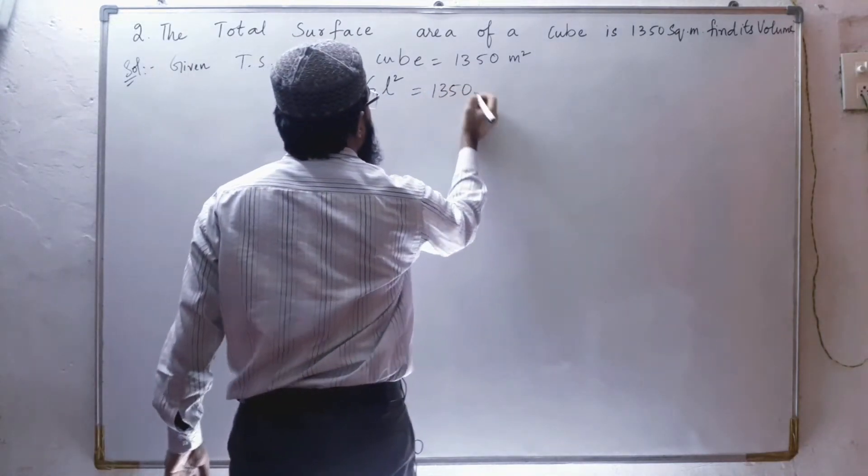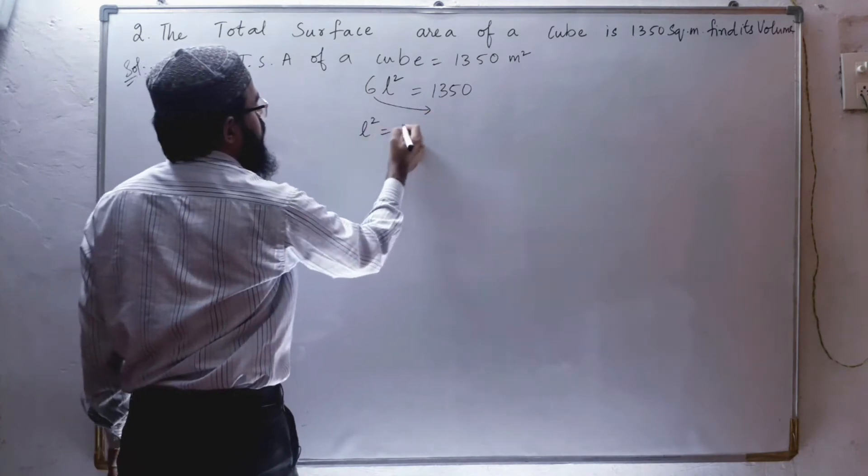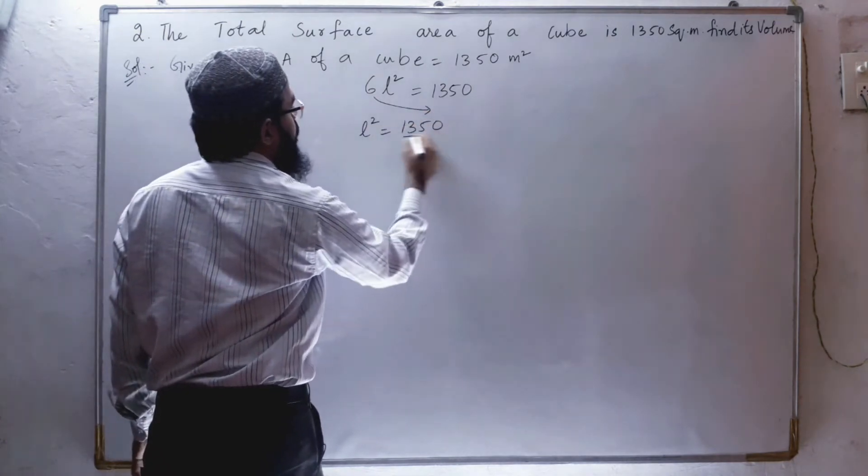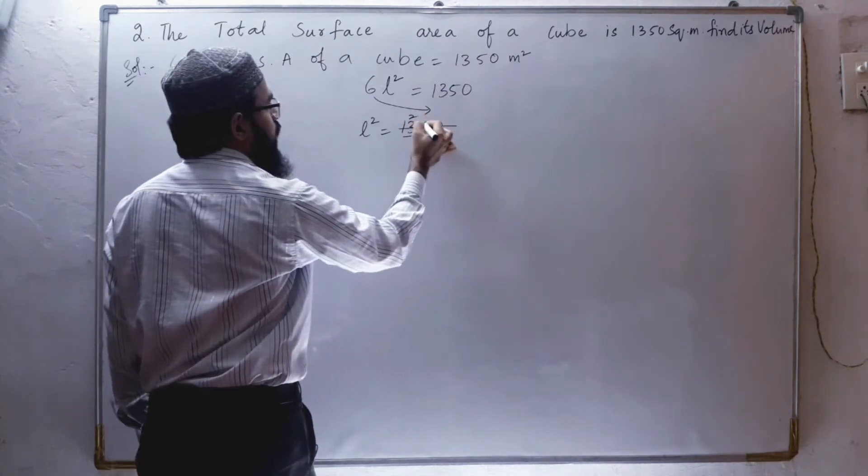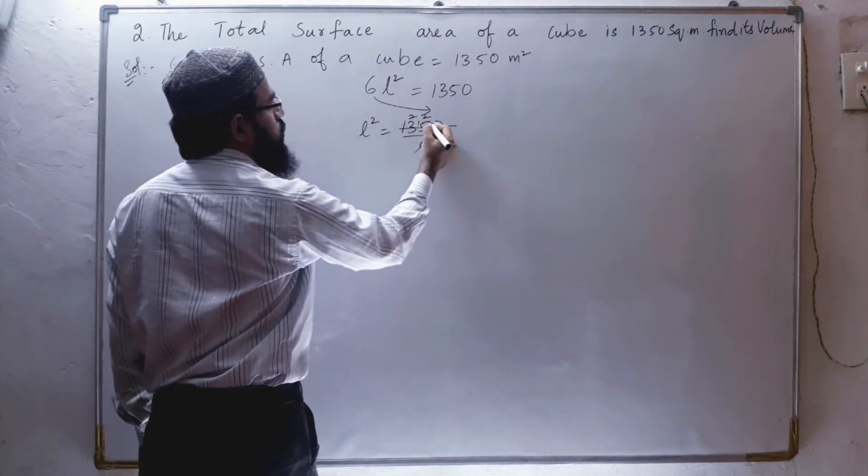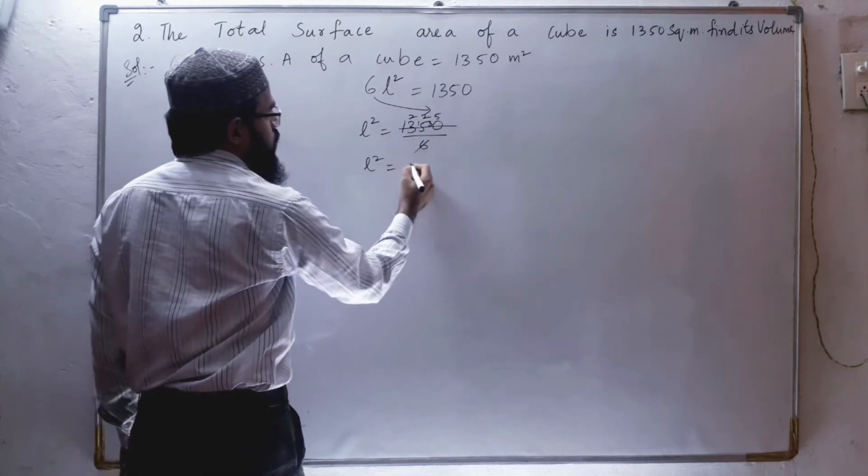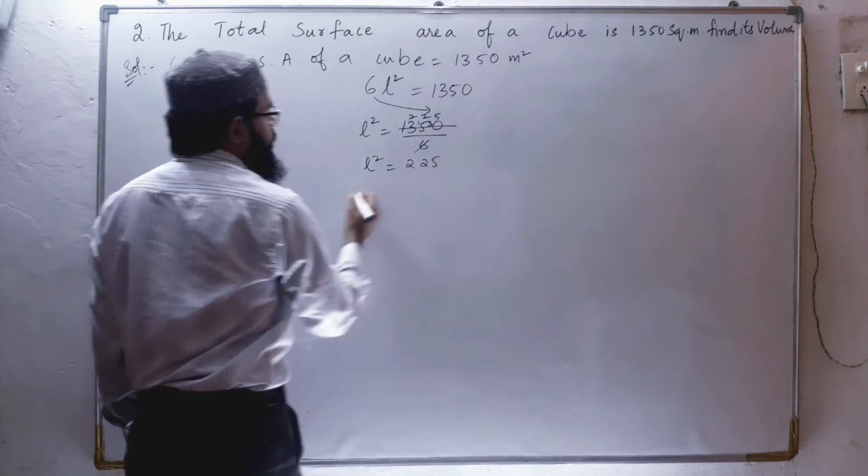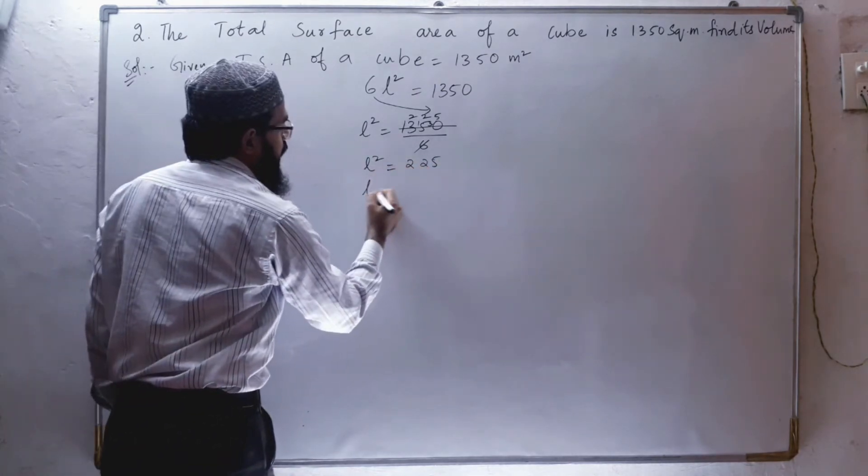So 6l² equals 1350. Send this 6 down, so l² equals 1350 by 6. 6 1s are 6, 2s are 12, 6 2s are 12, so 3 left. 6 5s are 30, so l² equals 225. When we remove this square, we get square root on the other side.